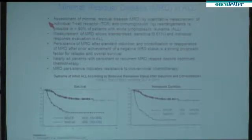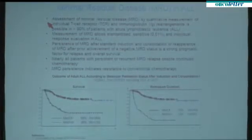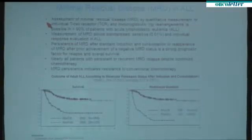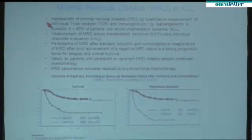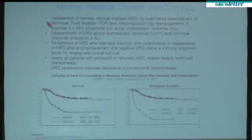ALL is basically a disease of the bone marrow. And traditionally, the disease is measured by simply counting the blasts on a bone marrow smear under the microscope. The sensitivity of this method is 5%. If the blast count is below 5%, we speak of a complete hematologic remission. But we know that blast cells are still present in the body, and this is called minimal residual disease.